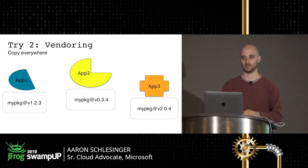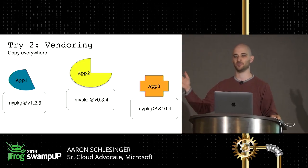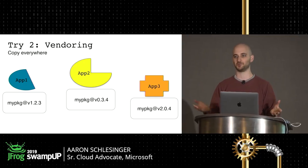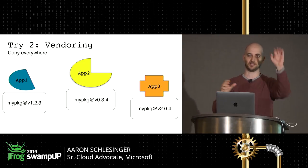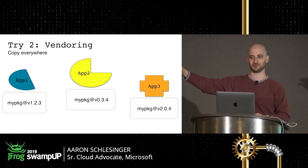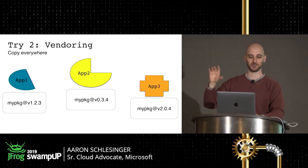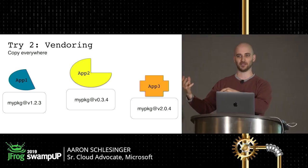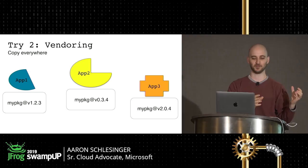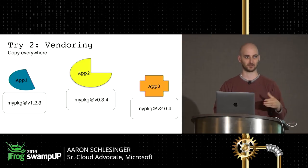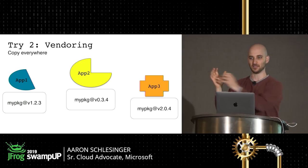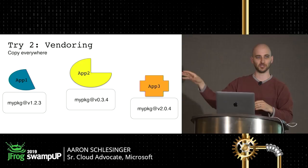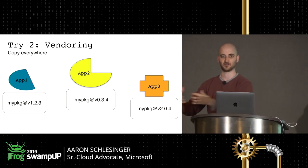The second approach was vendoring. If you have a node_modules directory in the JavaScript/npm world, this is similar to checking in your node_modules directory — you would literally copy all the code your app relies on into a vendor directory inside your repository and check it in. There was no npm-style repository to pull from; you'd git clone the code you needed into that single directory in your repo, and the Go tooling would build it into your application.